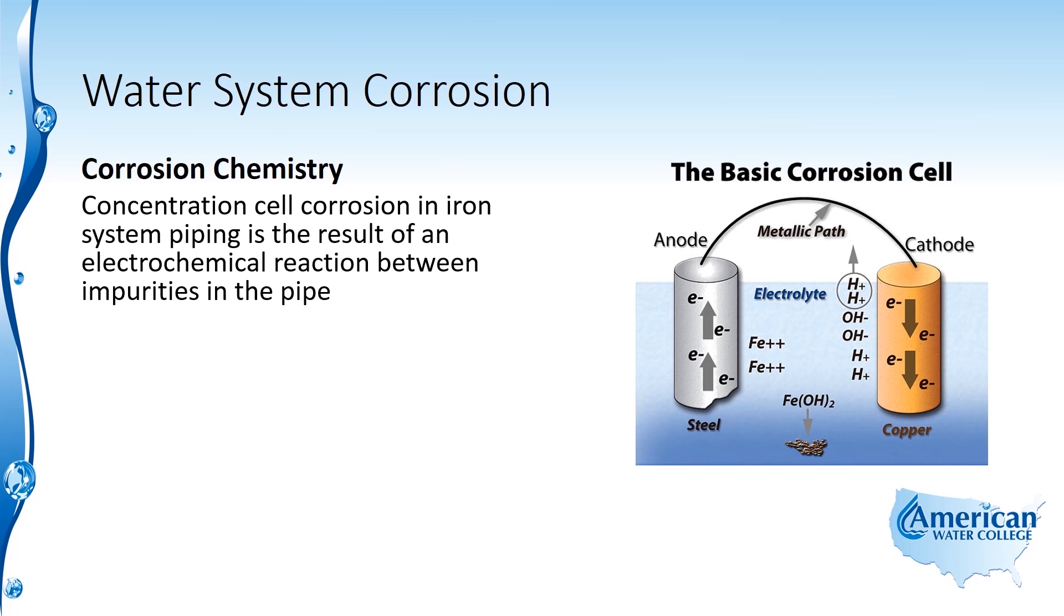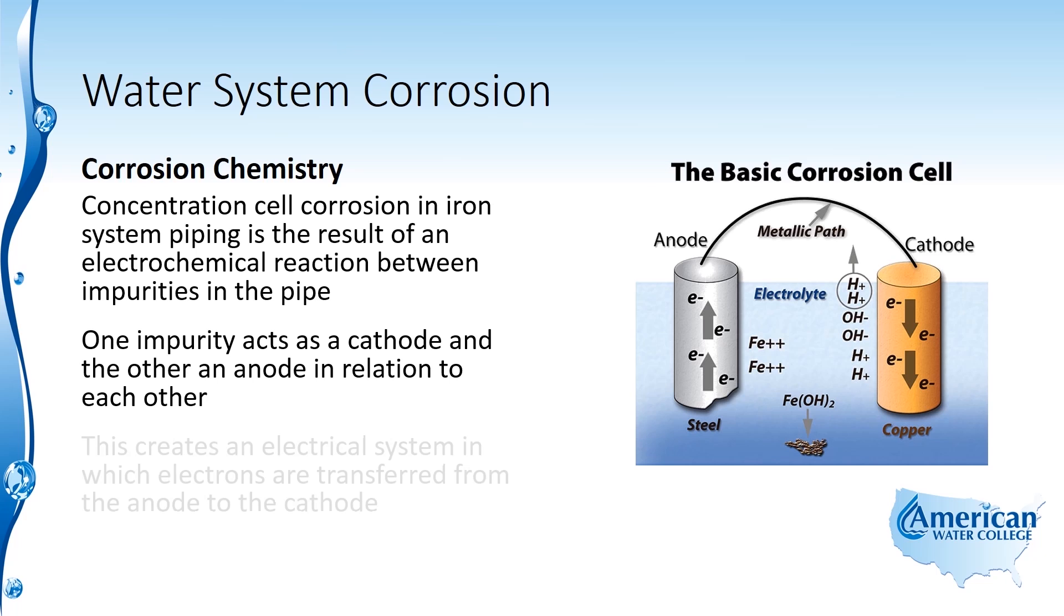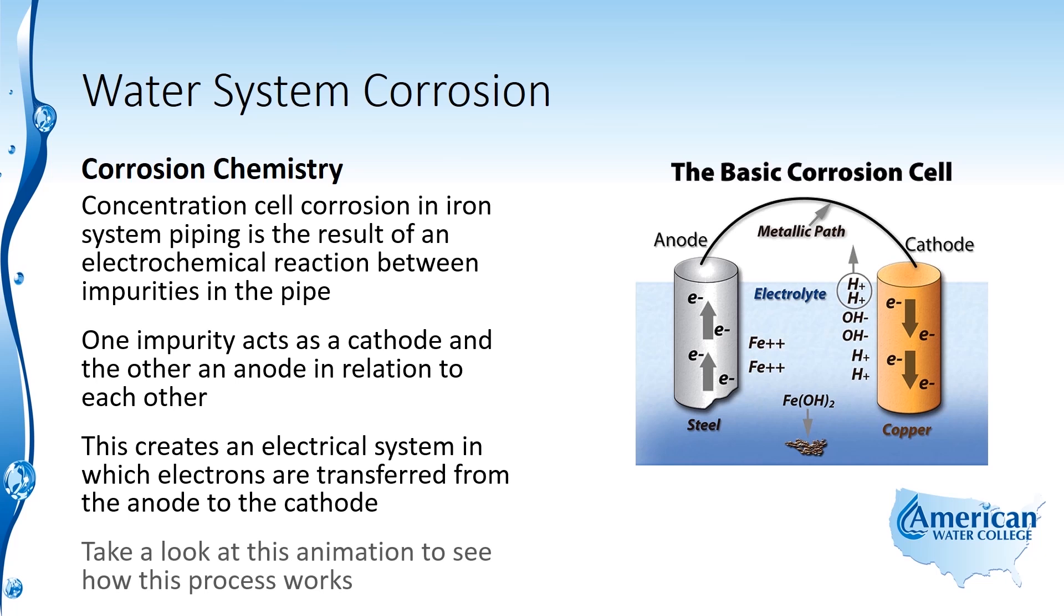Concentration cell corrosion in iron system piping is the result of an electrochemical reaction between impurities in the pipe. One impurity acts as a cathode and the other an anode in relation to each other. This creates an electrical system in which electrons are transferred from the anode to the cathode. Take a look at this animation to see how this process works.